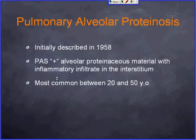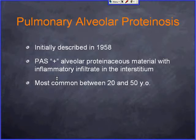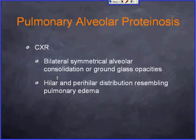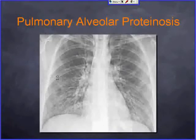In the idiopathic category, pulmonary alveolar proteinosis was initially described in 1958. It has PAS-positive alveolar proteinaceous material with inflammatory change in the interstitium. The age group is reported between 20 and 50 years old. Chest X-ray shows bilateral symmetrical alveolar consolidation in the hilar and perihilar distribution resembling pulmonary edema.